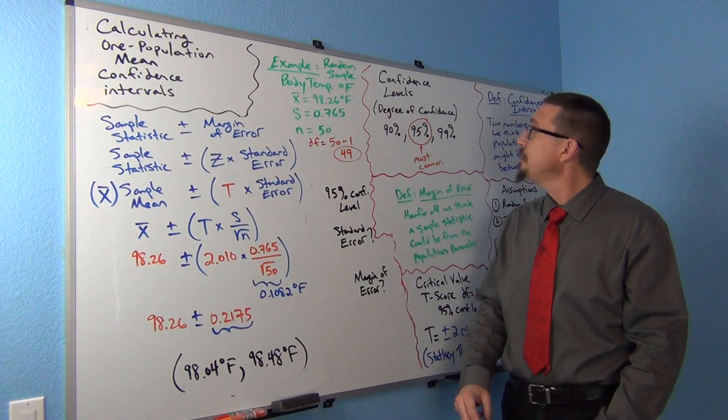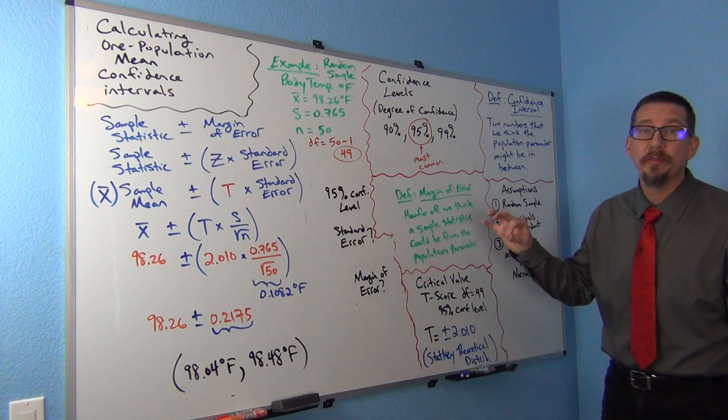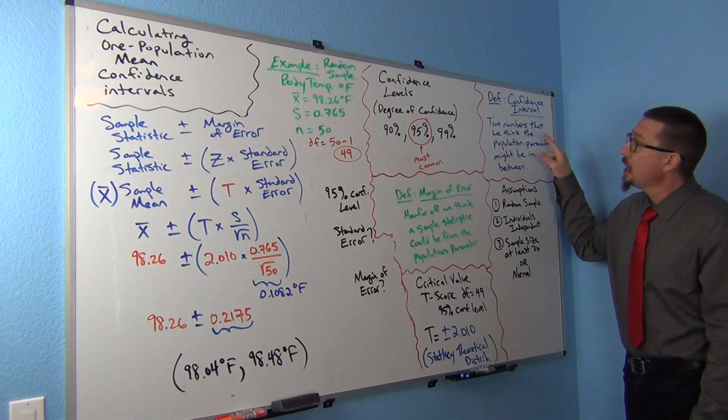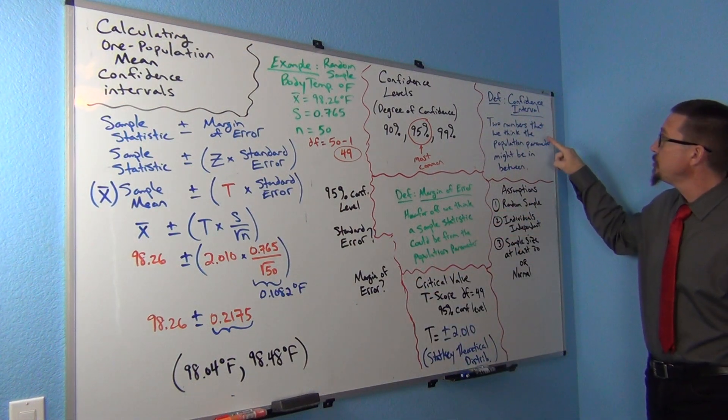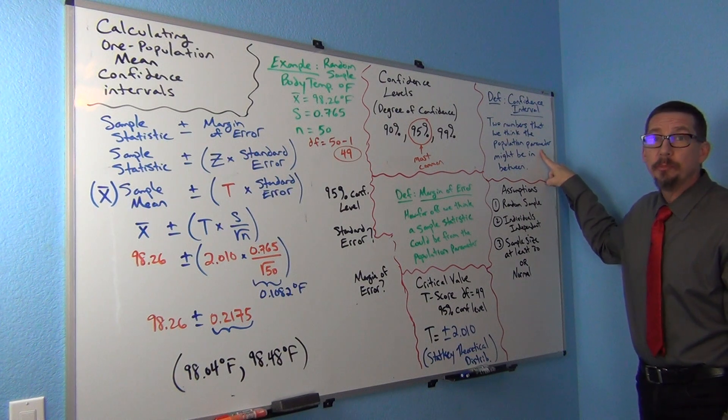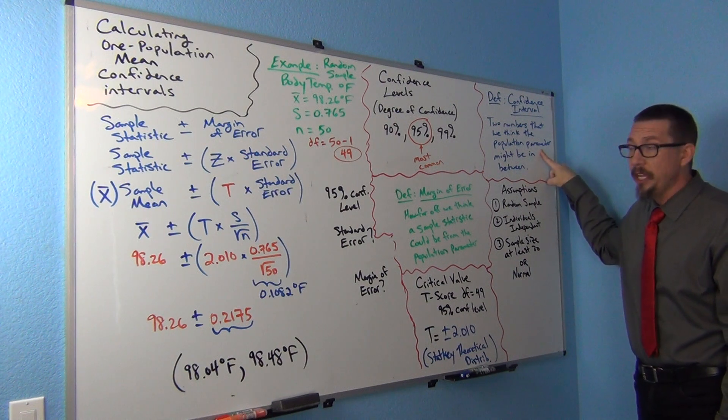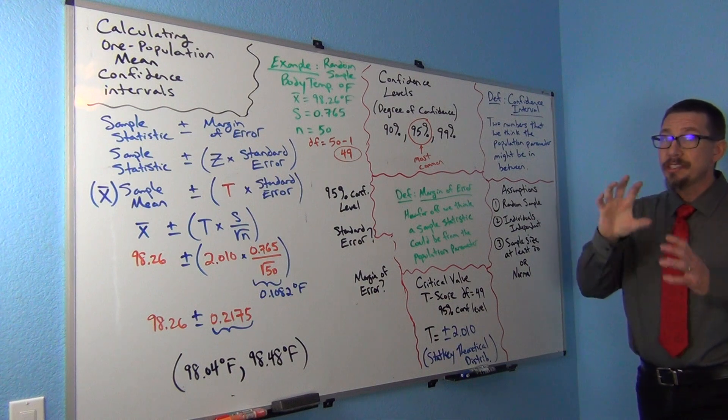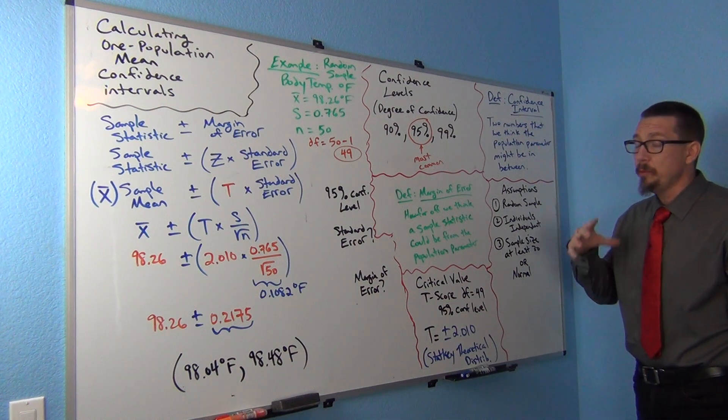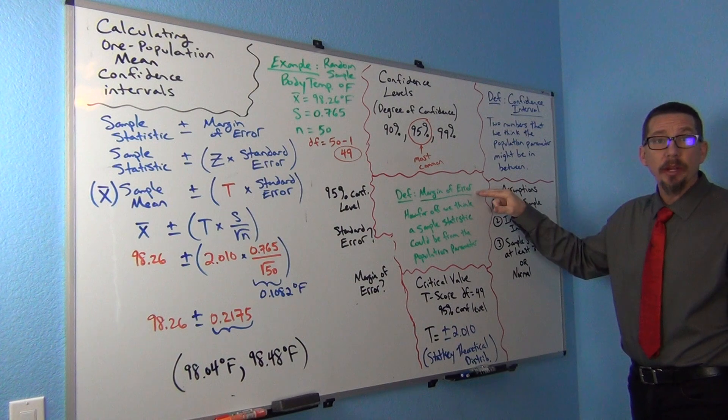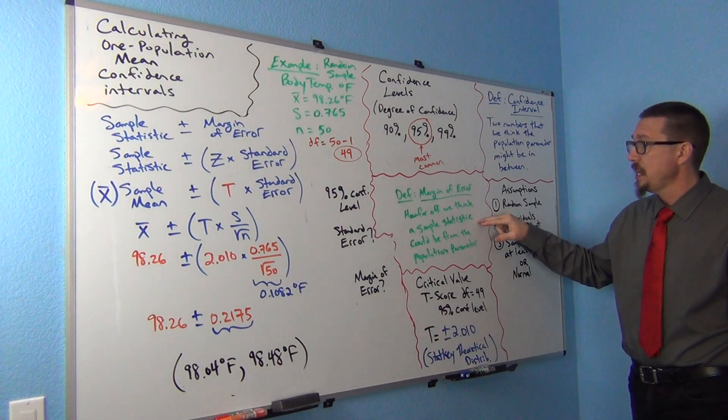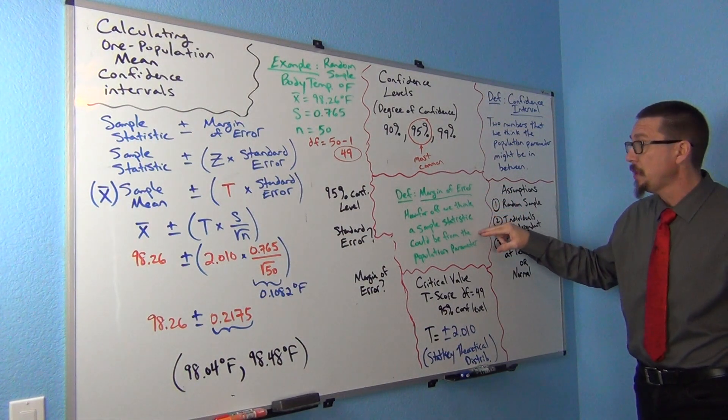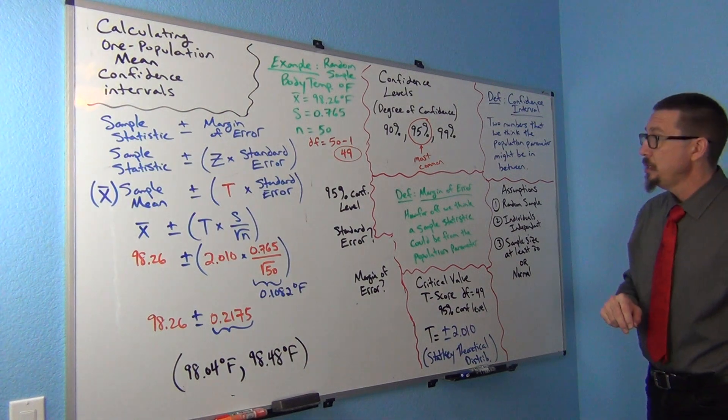Remember a couple of big definitions that we've already gone over. Confidence interval: two numbers we think the population parameter is in between. But we know that our sample will be off from the population. We say it will be off by the margin of error - how far off we think the sample statistic could be from the population parameter.